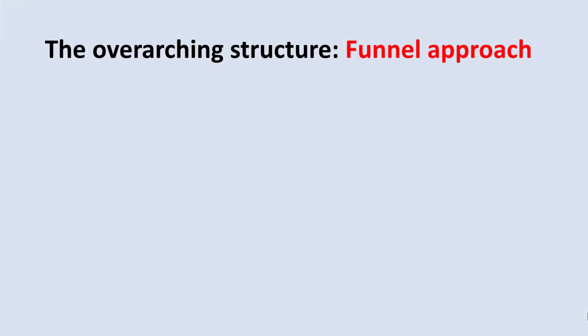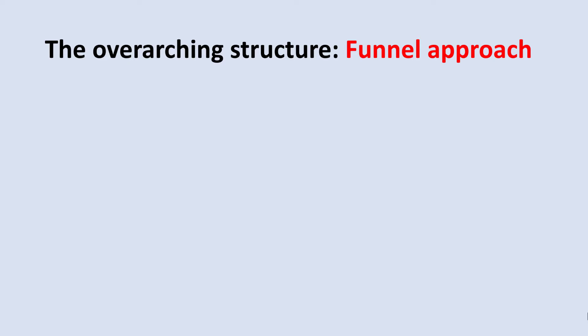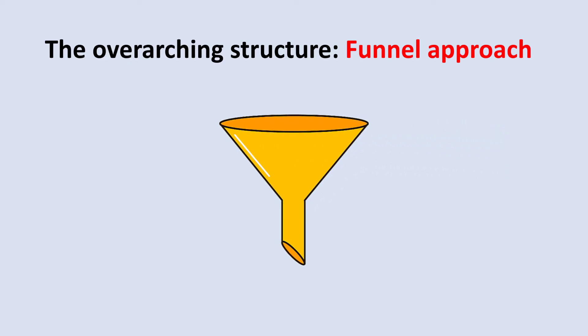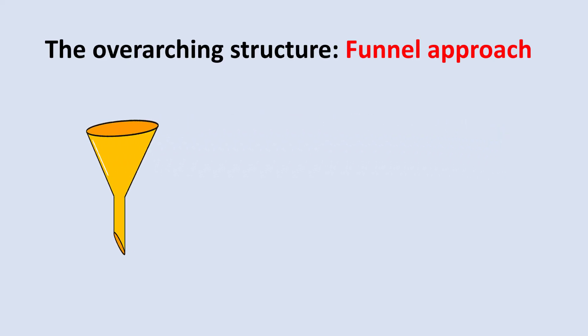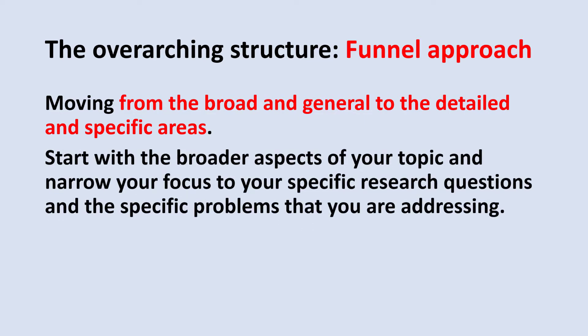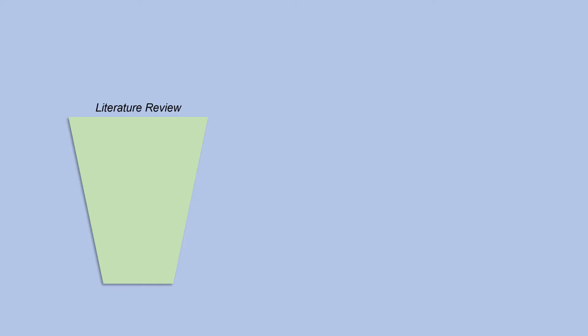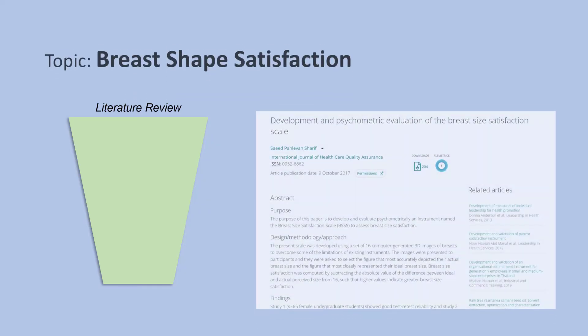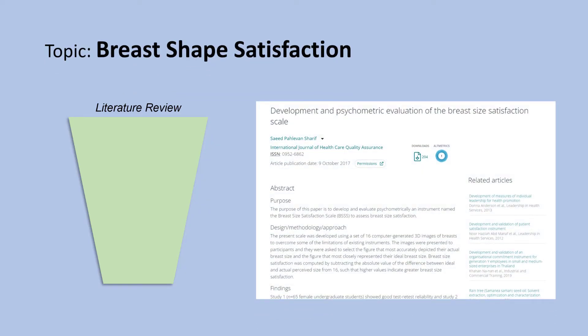In terms of the overarching structure, I personally prefer a funnel approach for writing the literature review — moving from the broad and general to the detailed and specific areas. So you start with the broader aspects of your topic and then narrow your focus until you reach your specific research questions and the specific problems you are addressing. For example, if your study is about breast shape satisfaction, you may start with reviewing the literature on body image and then narrow it down to breast shape satisfaction.